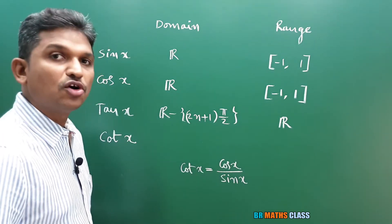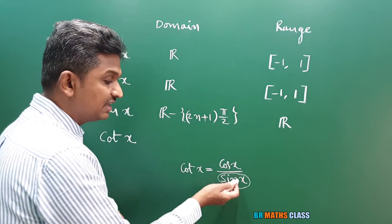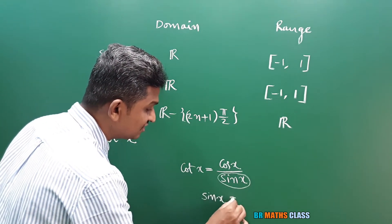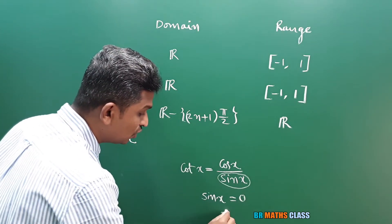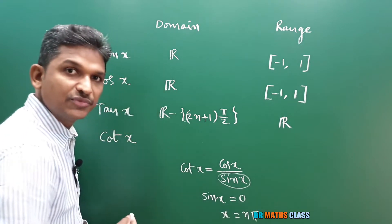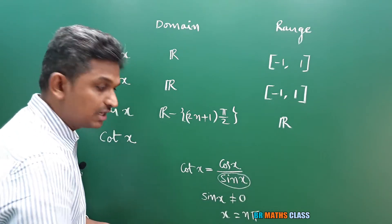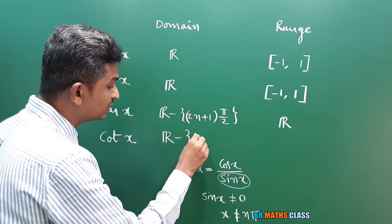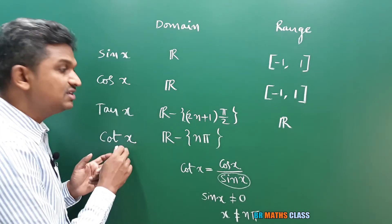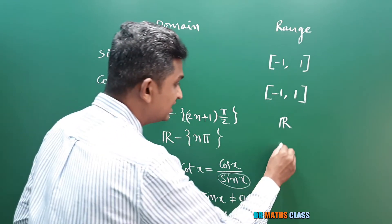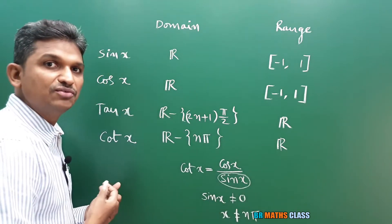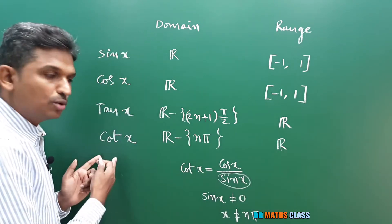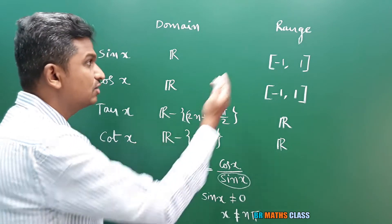Cot x can be written as cos x divided by sin x. Whenever sin x is 0, the denominator becomes 0 and cot x is not defined. We learned that when sin x is 0, x is nπ. So sin x cannot be 0, meaning x cannot equal nπ. Domain of cot x is all real numbers except nπ. If you observe the graph of cot x, it gives any real number, so the range of cot x is all real numbers.